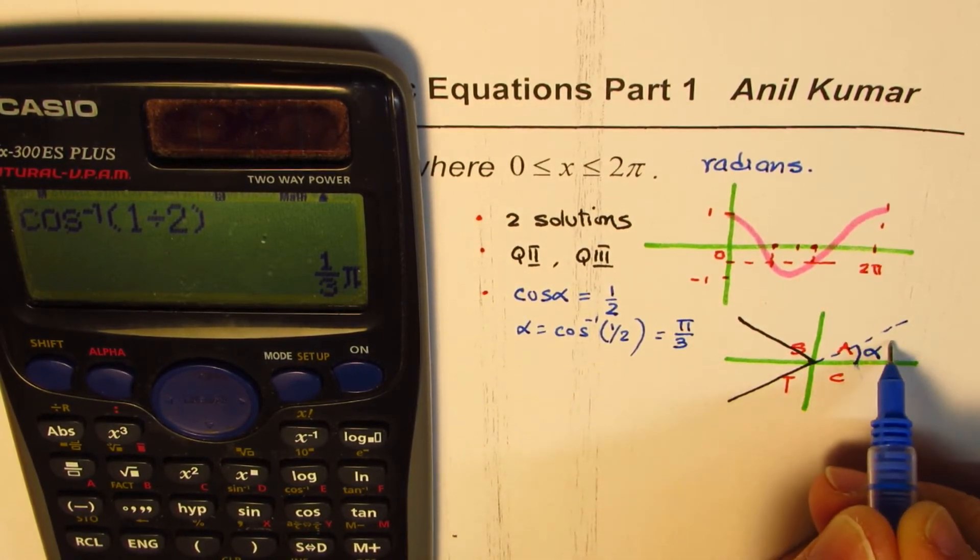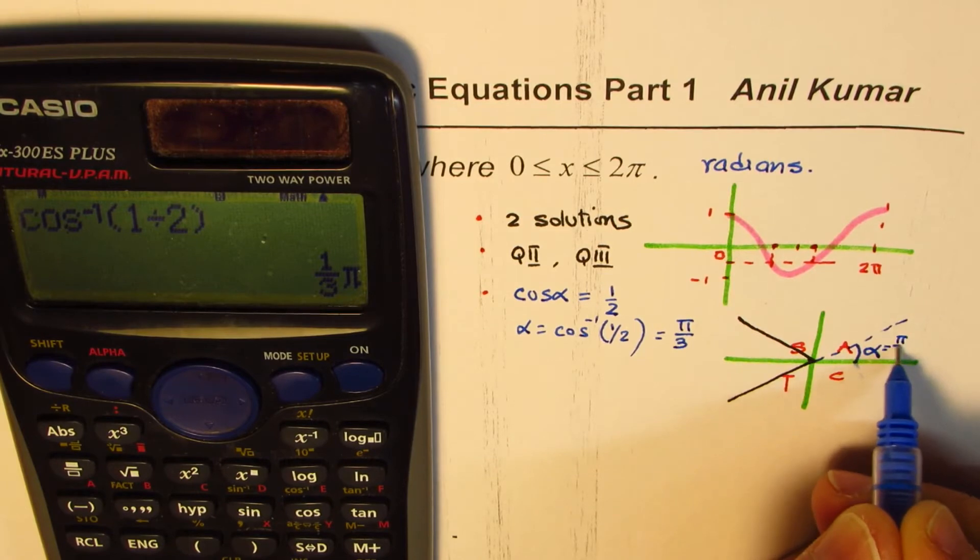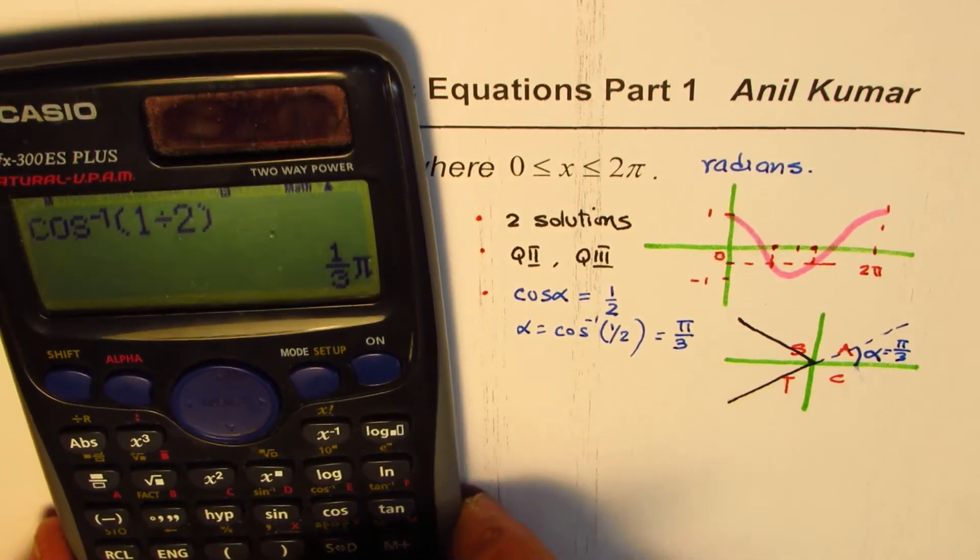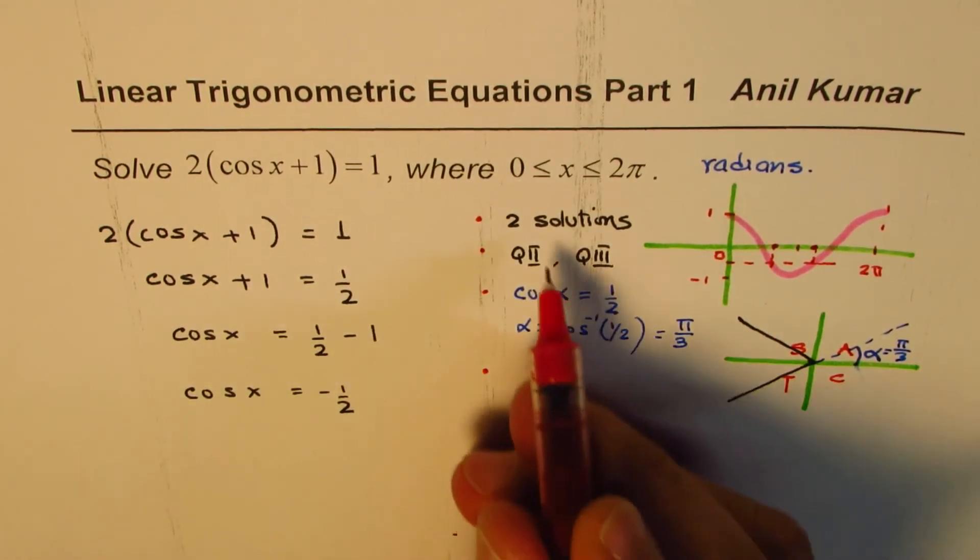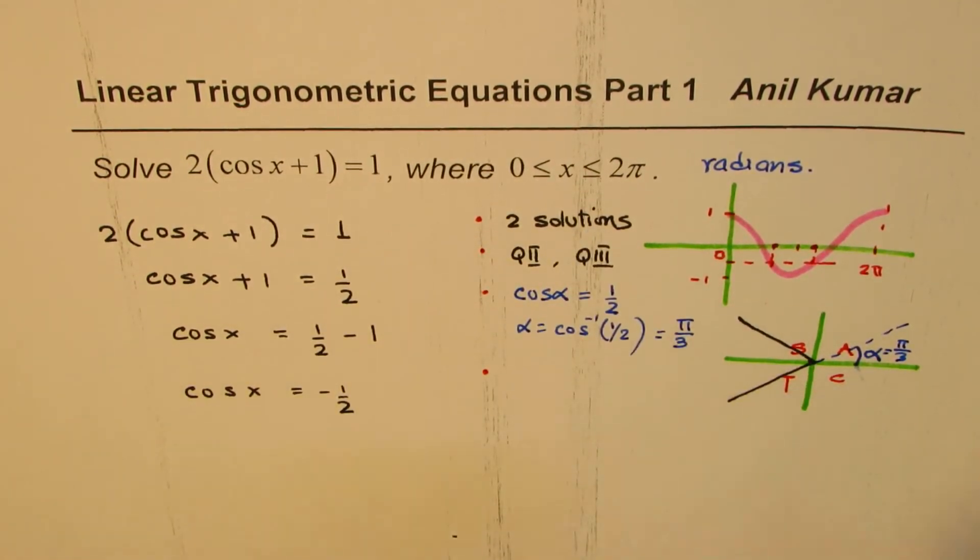And that gives us π/3. So α for us is π/3. Therefore, this angle is equal to π/3, that is the related acute angle.